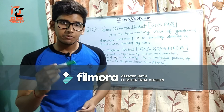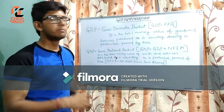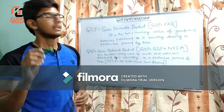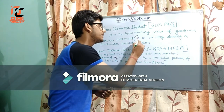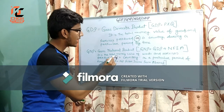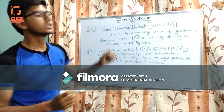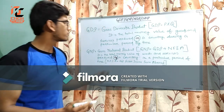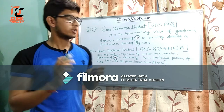Now let us understand the difference between GDP and GNP. The difference lies here: GDP focuses on production within a country, while GNP focuses on who is producing the commodity — that is, production by a country.